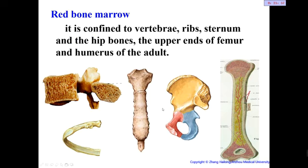Some bones retain red bone marrow throughout your entire life and can always produce blood cells. These bones are: the vertebrae, ribs, sternum, hip bone, and the upper and lower ends of long bones such as the femur and humerus. All other bones in adults contain only yellow bone marrow.